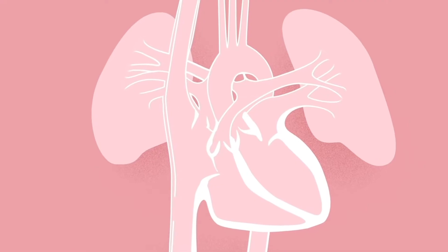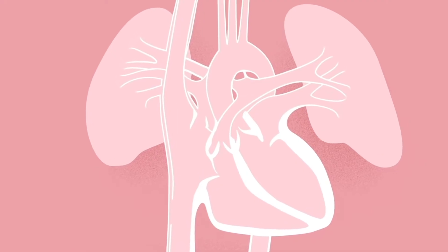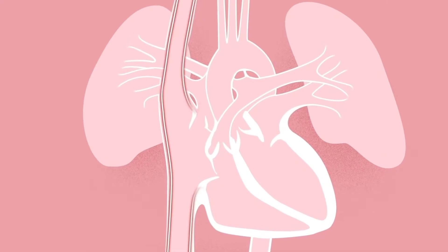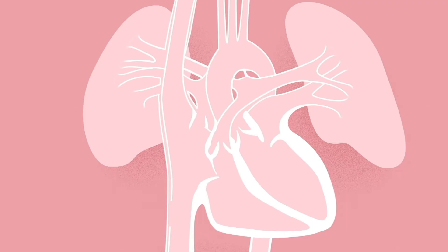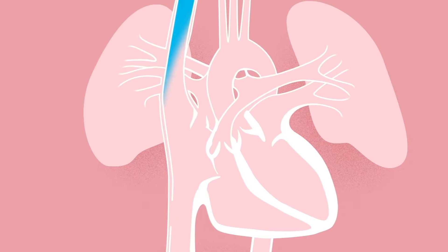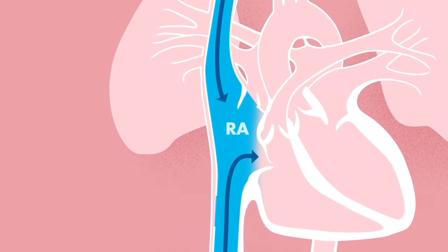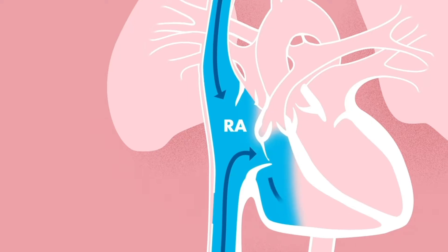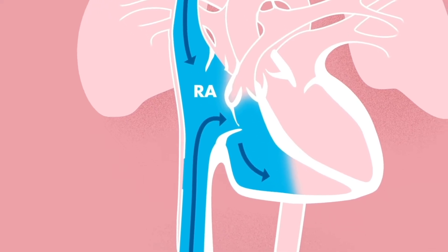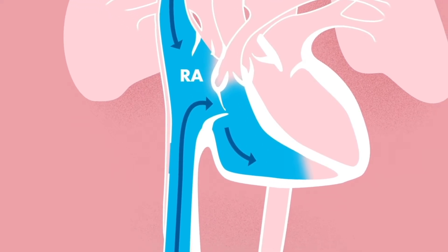Blood that has been used by the body returns to the heart through blood vessels called veins. The body's veins lead into the top right part of the heart called the right atrium. The blood then passes through the tricuspid valve and into the bottom right chamber called the right ventricle.